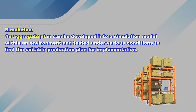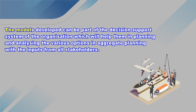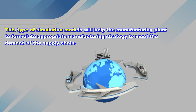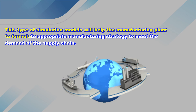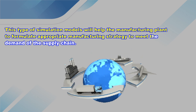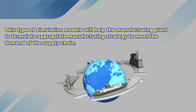Similarly, simulation is used as a method of solving aggregate planning. An aggregate planning problem can be developed into a simulation model and tested under various conditions to find a suitable production plan. The models developed can be part of the decision support system of the organization, helping in planning and analyzing various options in aggregate planning with inputs from all stakeholders, to formulate an appropriate manufacturing strategy to meet the demands of the supply chain.